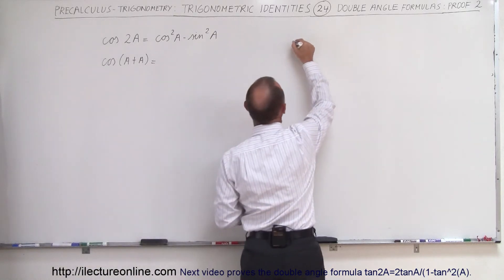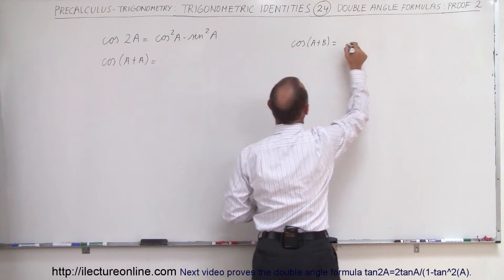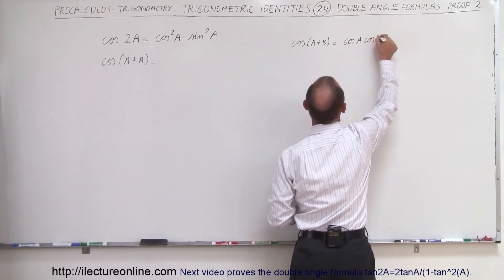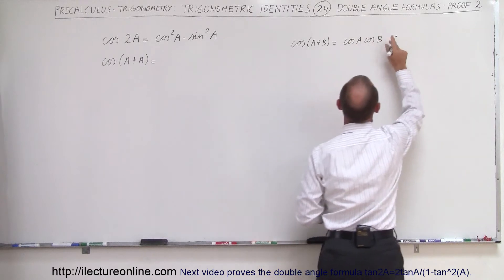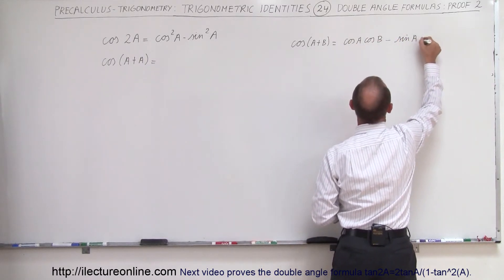if we have the cosine of A plus B, this becomes the cosine of A times the cosine of B. And if this is a plus, this becomes minus the sine of A times the sine of B.